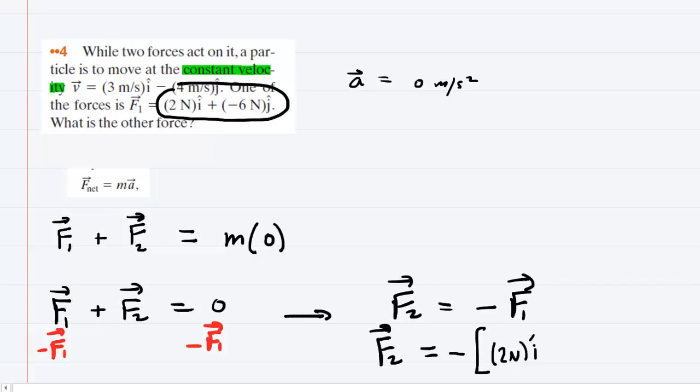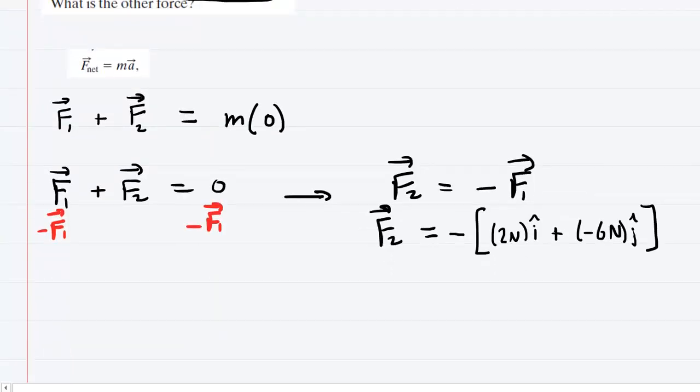2 newtons i-hat plus negative 6 newtons j-hat. And then all we have to do is distribute this minus sign. So once we distribute the minus sign, we'll have our unknown force F2.